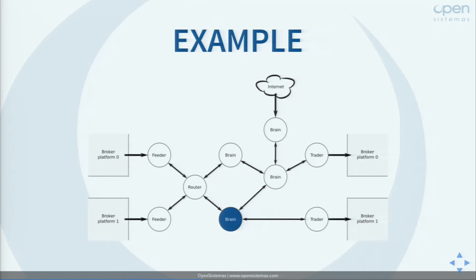Here's an example. Imagine we have a system without a brain and then we spawn one at runtime. This brain requests historical data from router. Router may not have this data, so it sends the request to feeder. The feeder gets the data from the broker and sends it back to router, and from router back to the brain — all asynchronously. From that point, the brain subscribes to real-time updates from router, performs calculations, generates orders sent to trader, and may also publish information that other brains can use.